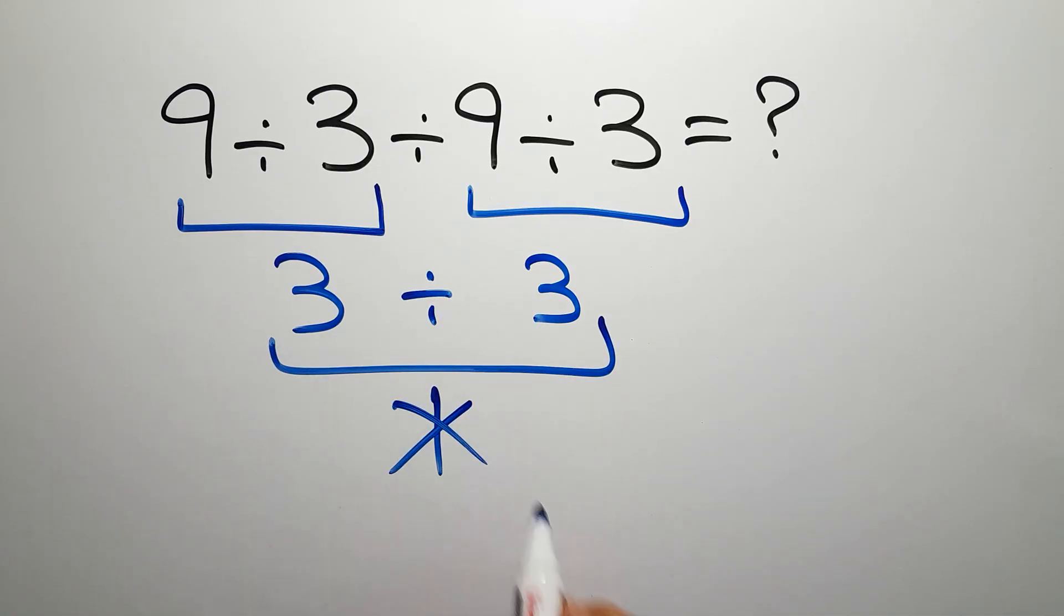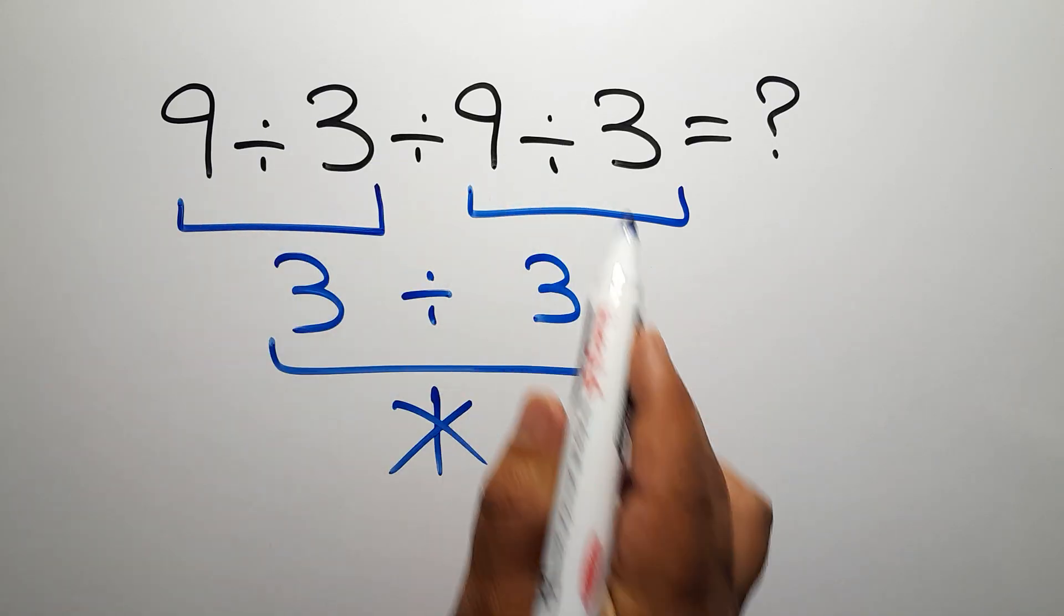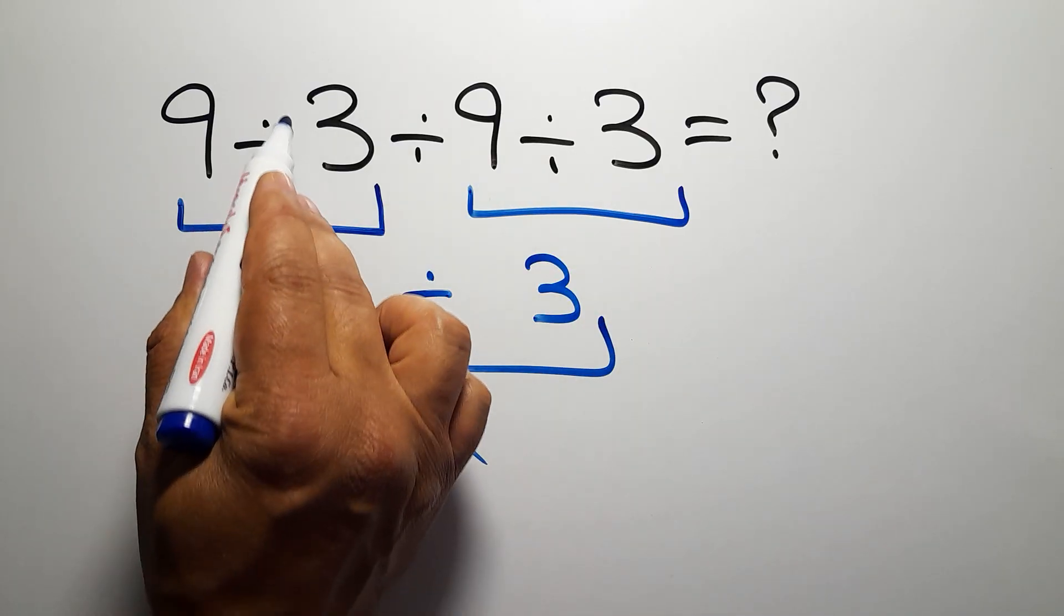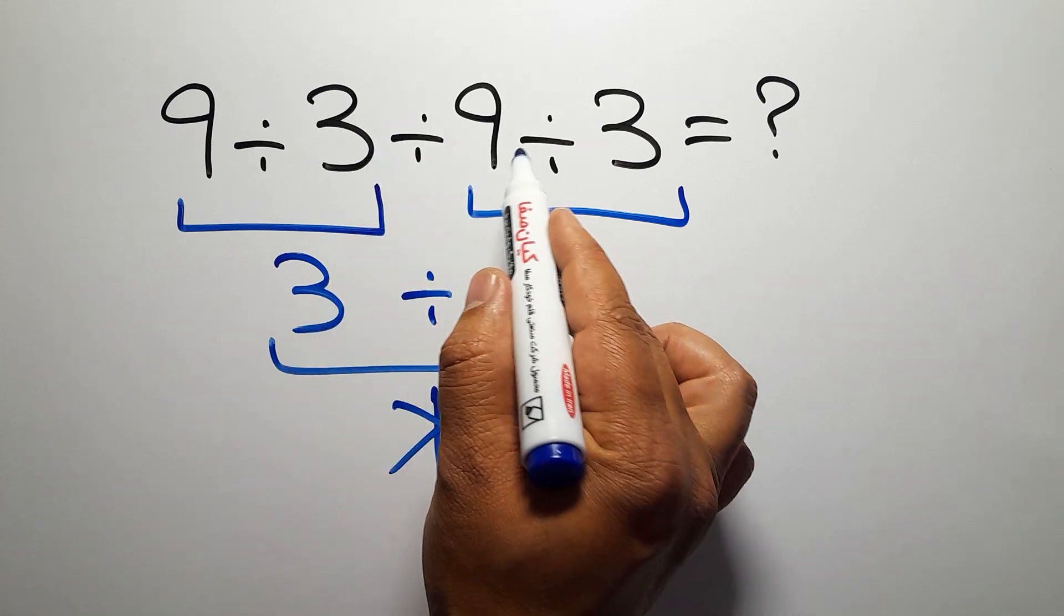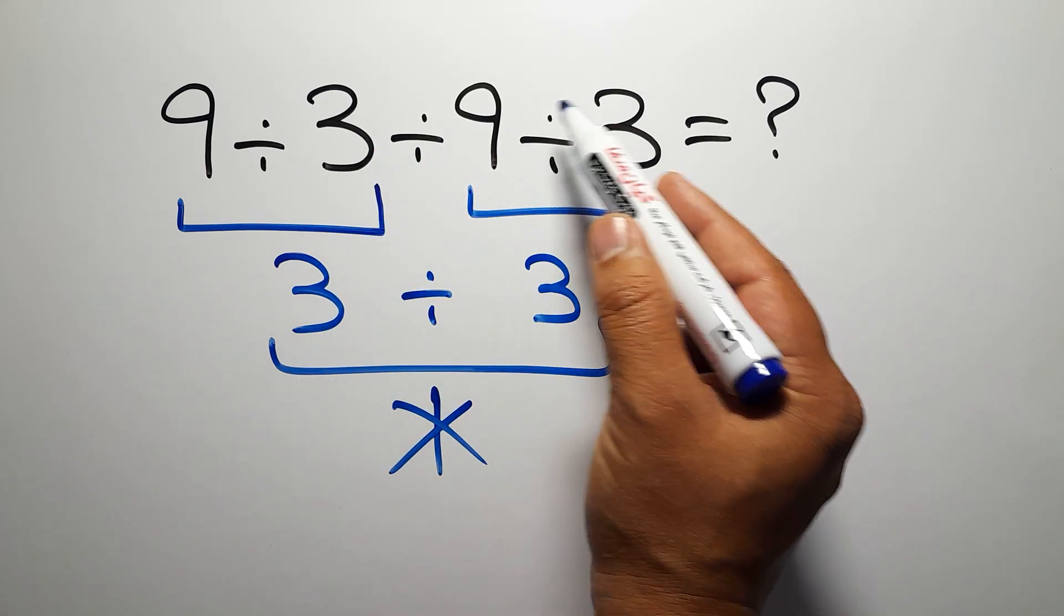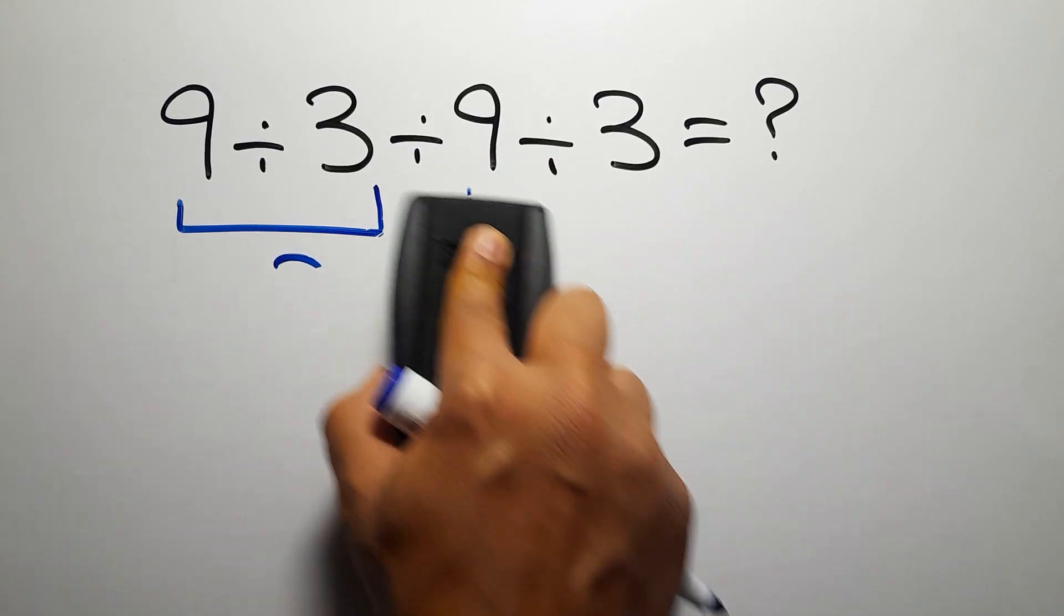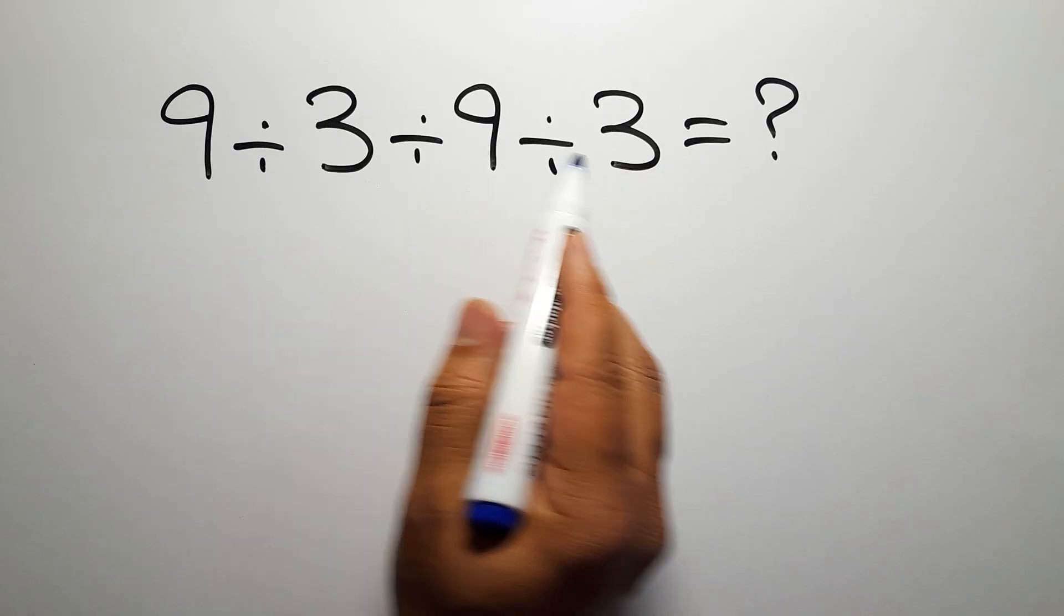But this answer is not correct, because when we have more than one division in an expression, we have to work from left to right. So first, we have to do this division, then this division, not this division. And finally, we have to do this division. So we work from left to right.